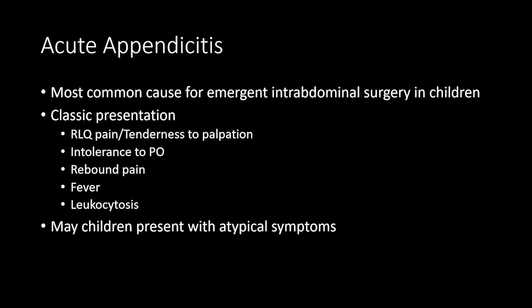Let's talk a little bit about acute appendicitis. It's the most common reason for children to present to the hospital and require emergent intra-abdominal surgery. It has a very classic presentation with right lower quadrant pain, right lower quadrant tenderness to palpation, an intolerance to PO intake, rebound pain indicating peritonitis on physical exam, and fever and leukocytosis with a left shift. Despite this classic presentation, many children will present with atypical symptoms, making the diagnosis of appendicitis in young children challenging.